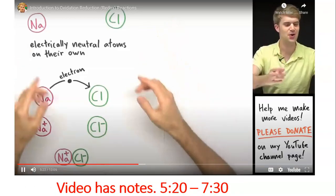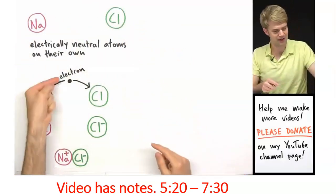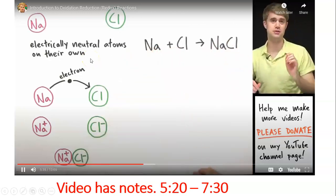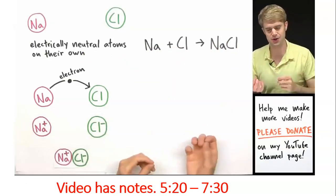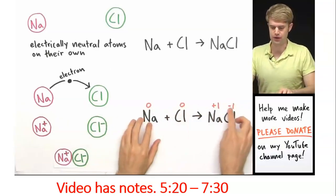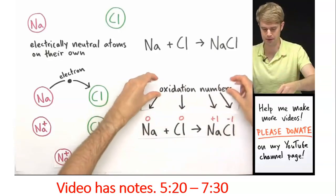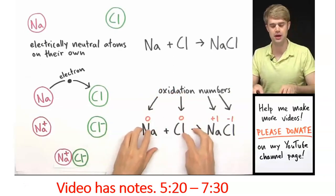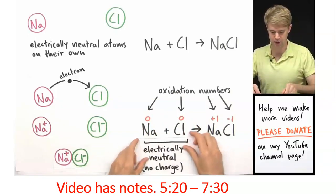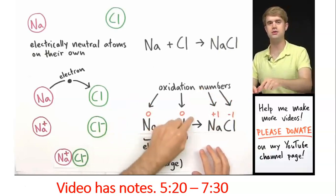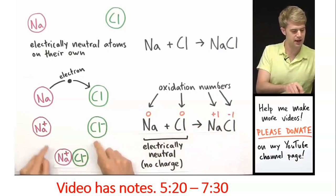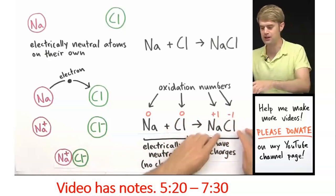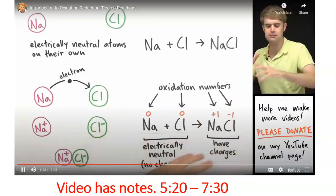Starting from electrically neutral atoms, an electron transfer occurs to produce ions that stick together. Oxidation numbers help track what's happening with electrons and charges. Above Na and Cl we write zeros, indicating they start electrically neutral. After the reaction, sodium gets a +1 and chloride gets a -1 oxidation number. These numbers remind us that sodium and chlorine start neutral and only gain charges after the electron transfer.